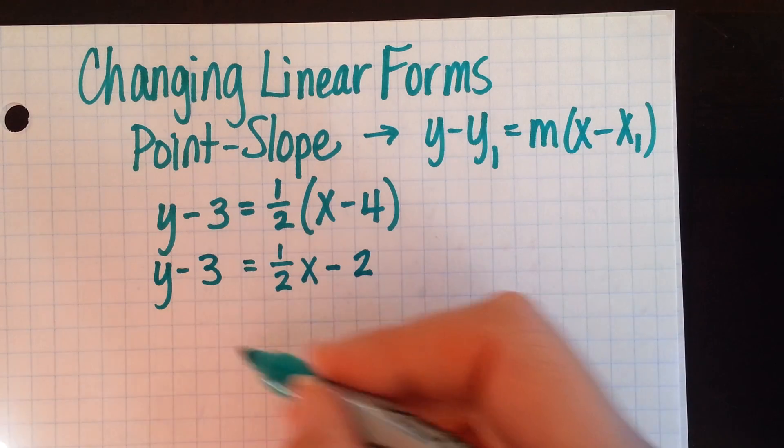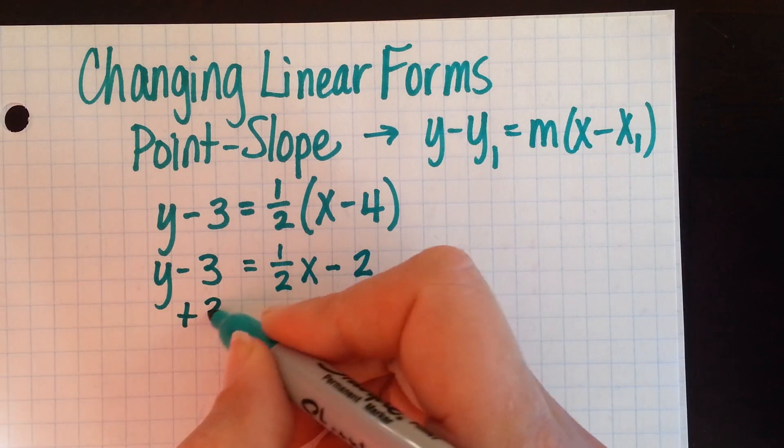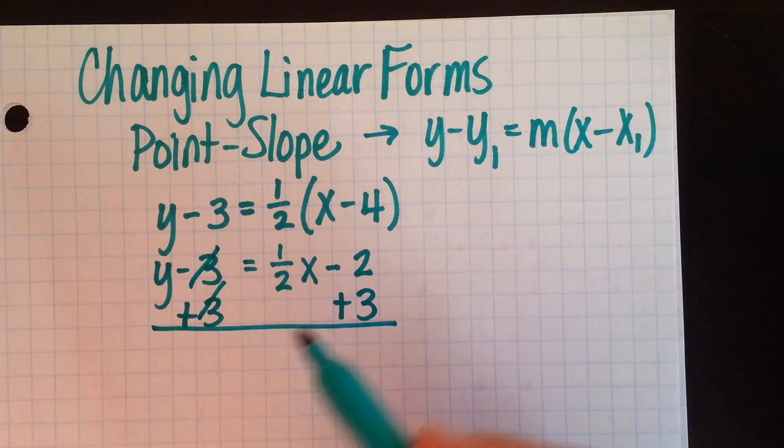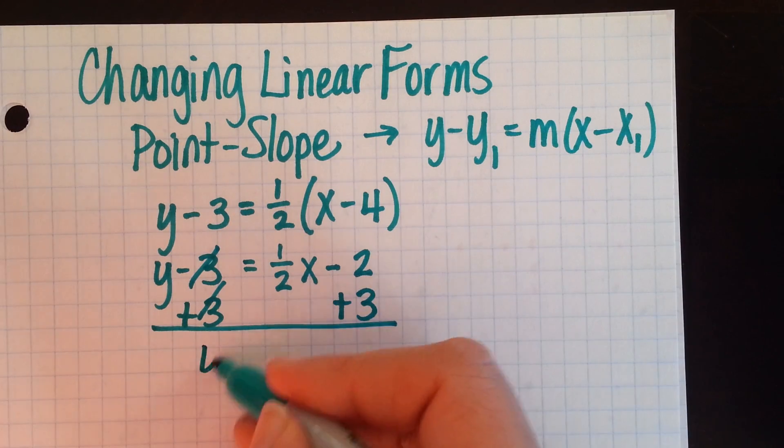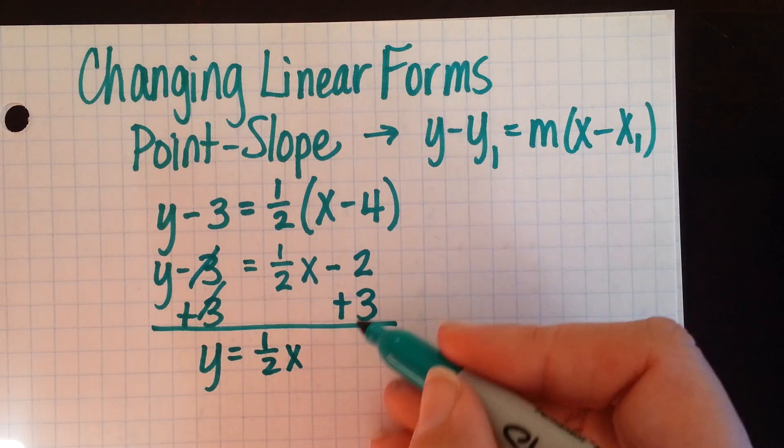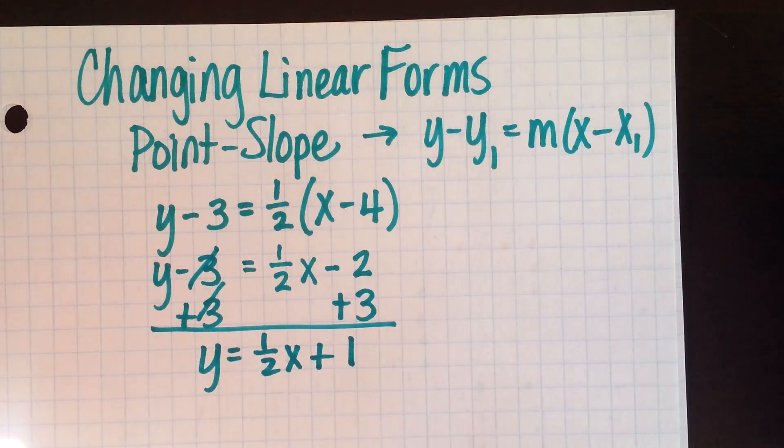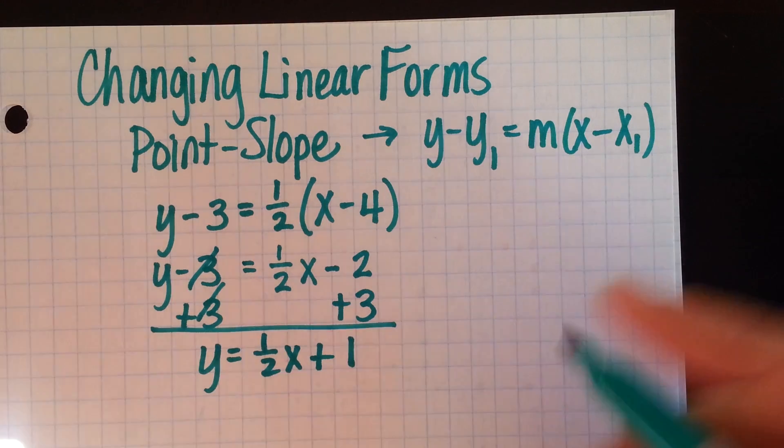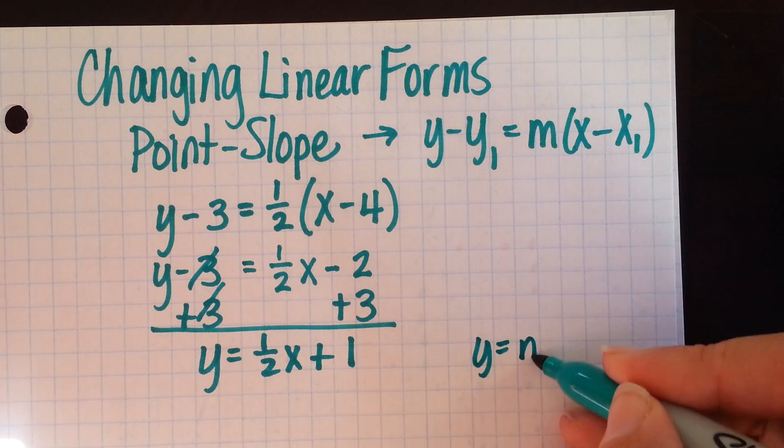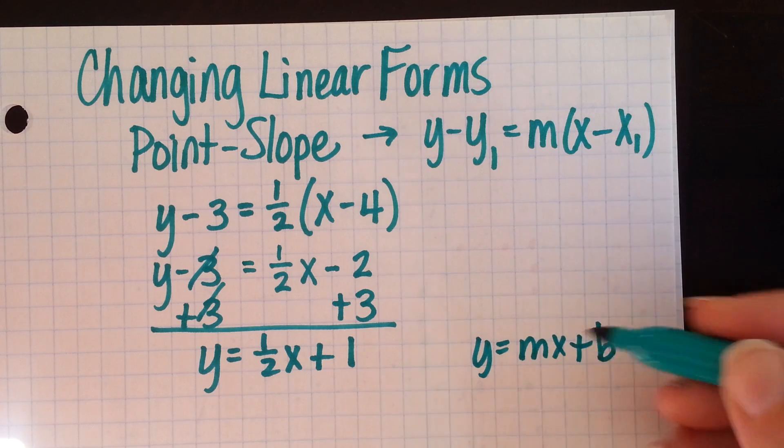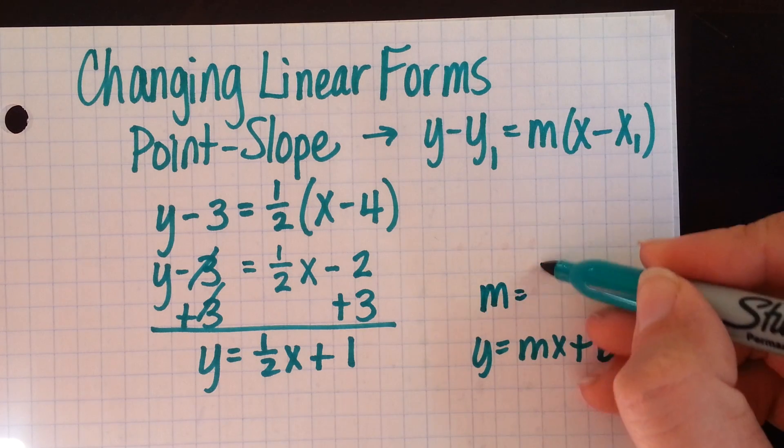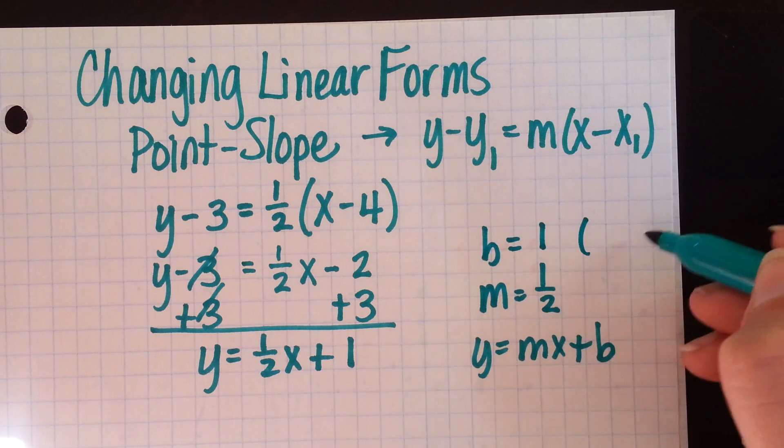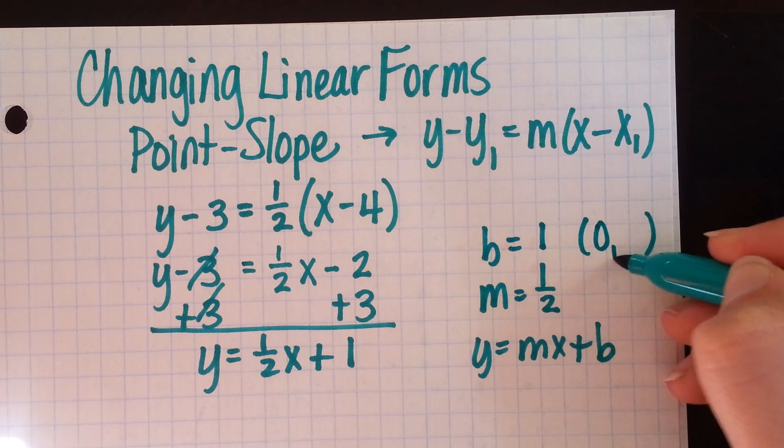Next, I can add this 3 to the other side, to both sides actually. But when it's added to the other side, it cancels on the left and we end up getting something in slope-intercept form on the right side. So we have y equals 1 half x plus 1. This is in the form y equals mx plus b. So we now know that our slope is 1 half and our y-intercept is 1, or it's the point 0, 1.